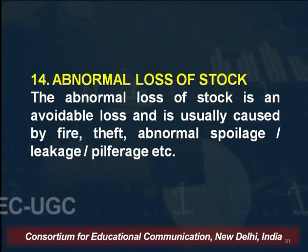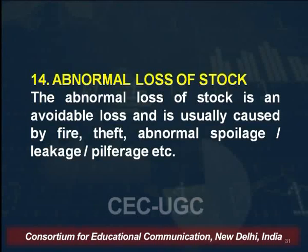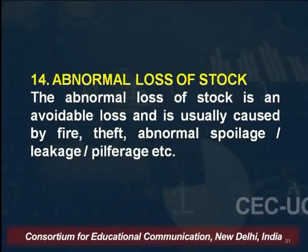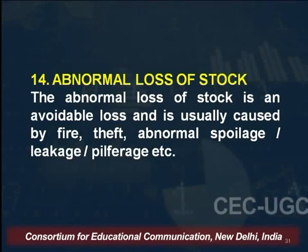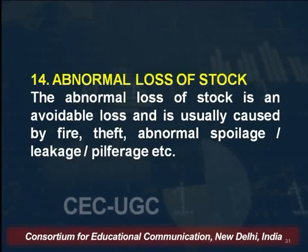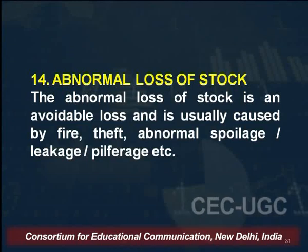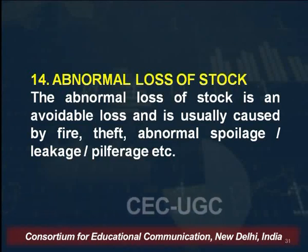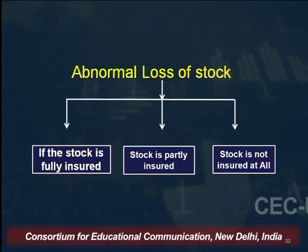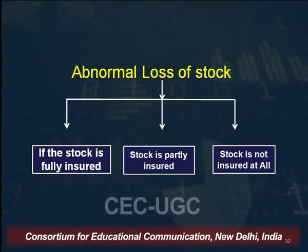The next item is abnormal loss of stock. Abnormal loss of stock is an avoidable loss usually caused by fire, theft, abnormal spoilage, leakage, or pilferage. There are three cases for abnormal loss of stock: Case 1 — the entire stock is fully insured; Case 2 — stock is partly insured; Case 3 — stock is not insured at all.